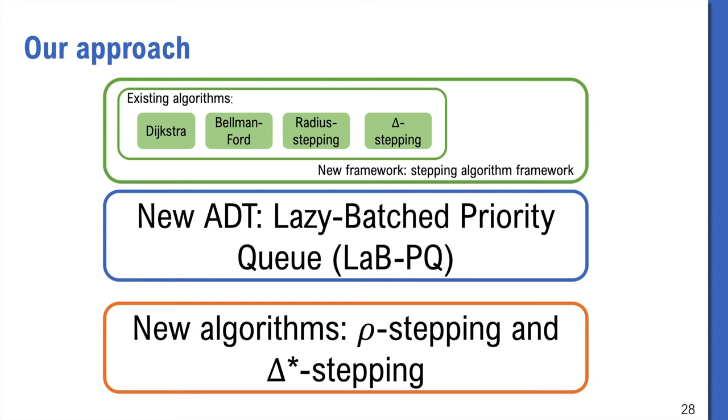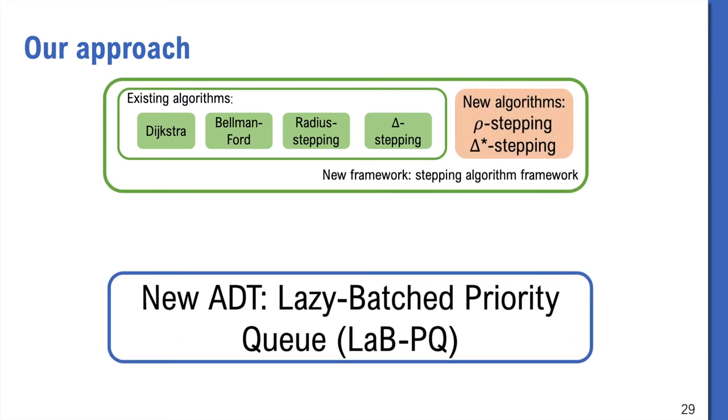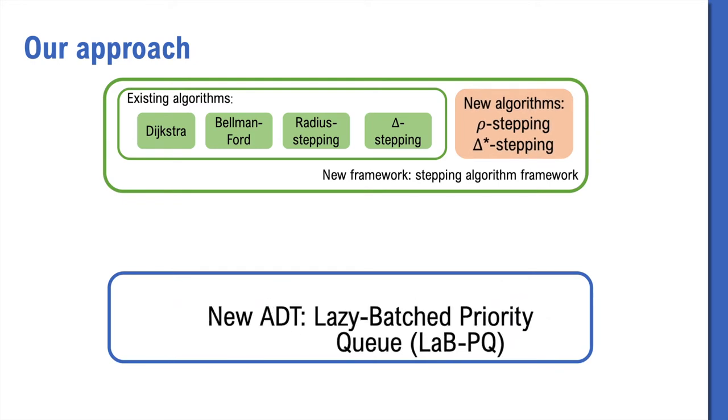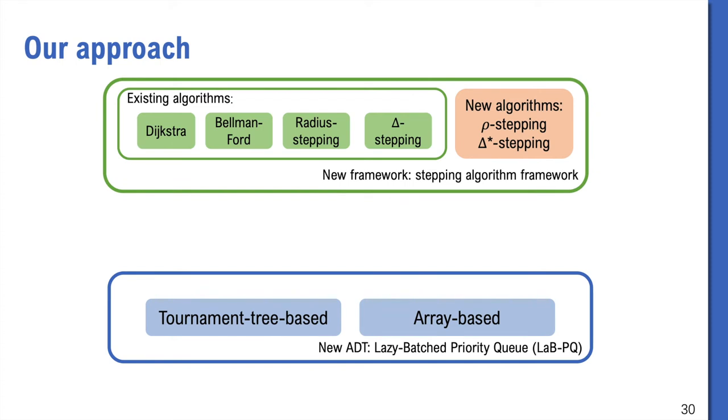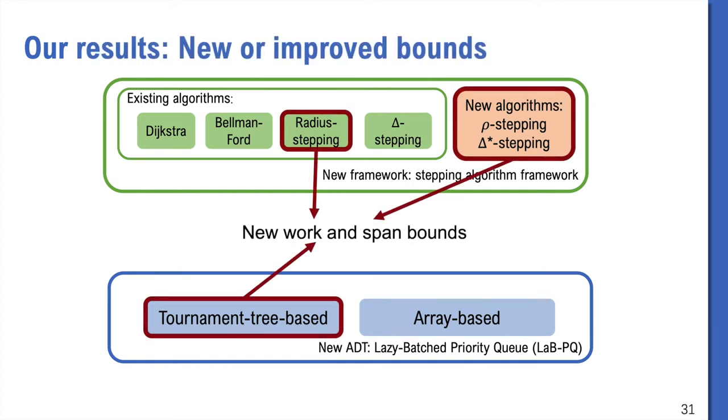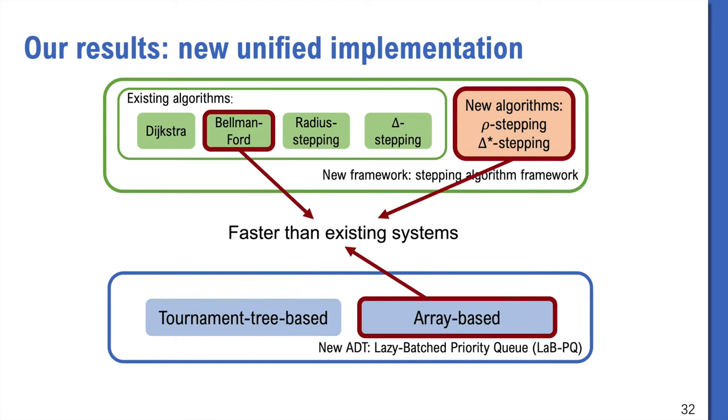First of all, we show that many existing algorithms fall into this framework, including Dijkstra, Bellman-Ford, Delta-Stepping and Radius-Stepping, which is a theoretically efficient algorithm. Of course, our new algorithms, Rho-Stepping and Delta*-Stepping also fall into this framework. Then we show two data structures for LabPQ. One based on tournament tree, the other based on arrays. Using tournament tree-based implementation, we achieve new bounds. Practical and efficient implementation, which outperforms existing systems.